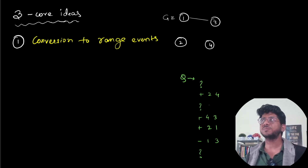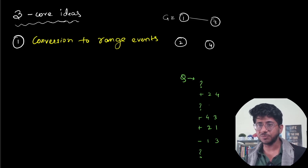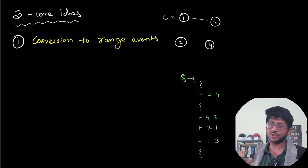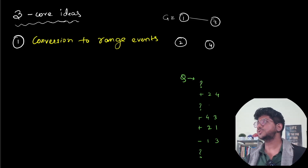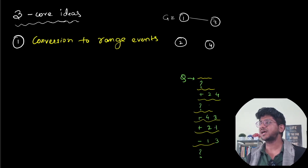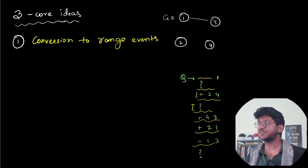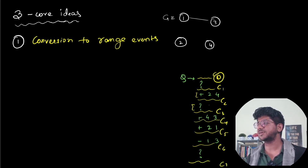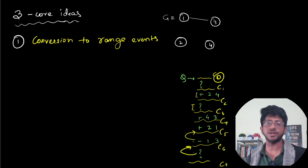The first thing you have to do is the conversion of this particular process into range events. Each query either finds some answer or changes the configuration of the graph. There is an initial graph, then queries happen — add an edge, then a query, then another addition, and so on. After each query, there is a new configuration of the graph: configuration zero, configuration one, configuration two, and so on. So each query happens on a specific configuration.